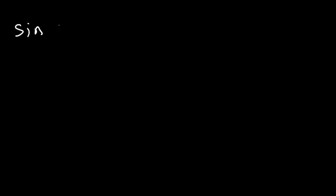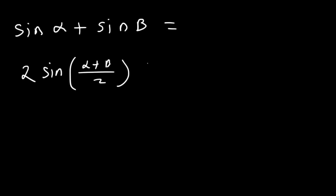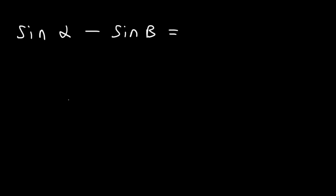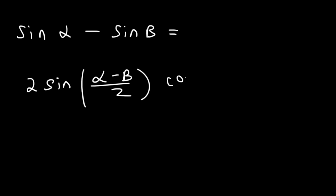Now let's go over the sum-to-product formulas that you need to know. The first one is: sine alpha plus sine beta — a sum of two trig functions — is equal to 2 sine((alpha plus beta)/2) times cosine((alpha minus beta)/2). The next one is sine alpha minus sine beta, equal to 2 sine((alpha minus beta)/2) times cosine((alpha plus beta)/2).